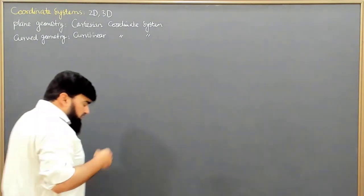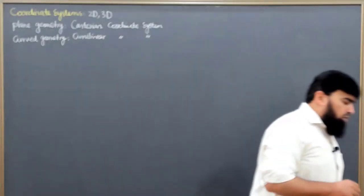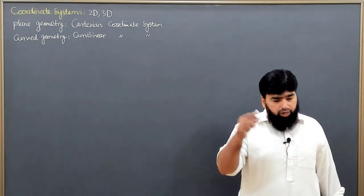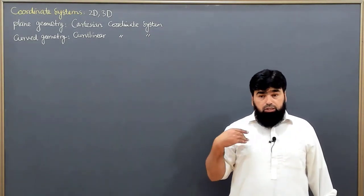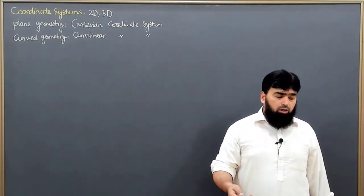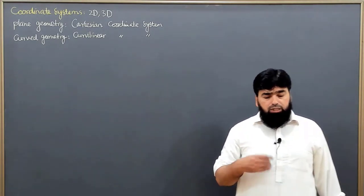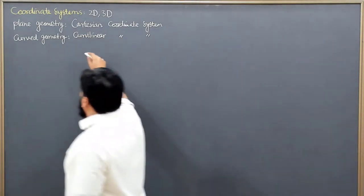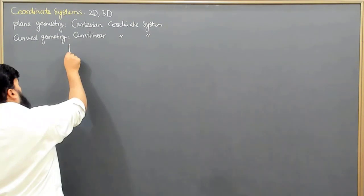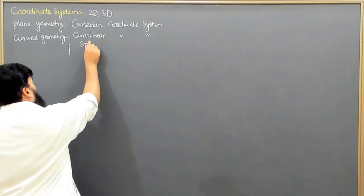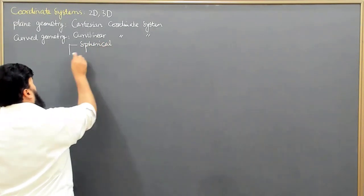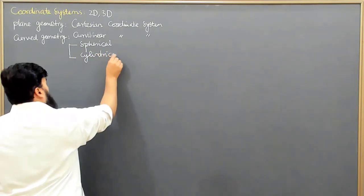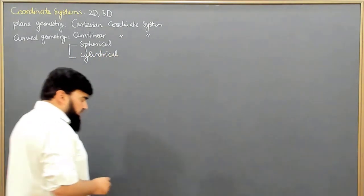The coordinate system is independent of whatever physical quantity we are studying. For example, if we are having a vector, whether we consider the Cartesian coordinate system, a spherical coordinate system, or a cylindrical coordinate system — because in the curved geometries we have two systems: the spherical and the cylindrical. Both are curved geometries and we will study them as well.